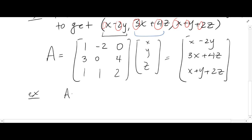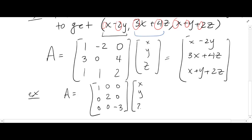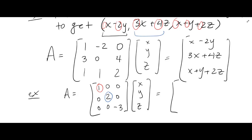Another example: if you have a diagonal matrix with entries along the diagonal and zeros everywhere else, the effect when you multiply it by (x, y, z) is that it multiplies the first entry by the first diagonal entry, the second entry by the second diagonal entry, and so on. So it'll give you (x, 2y, negative 3z).